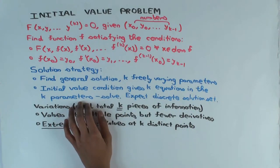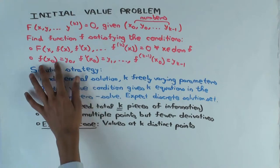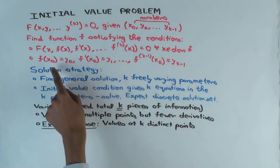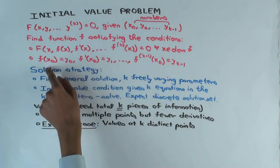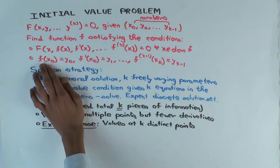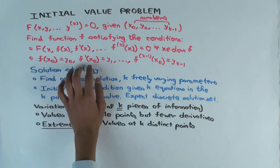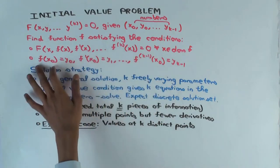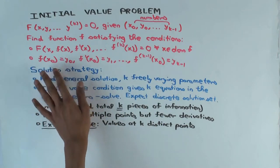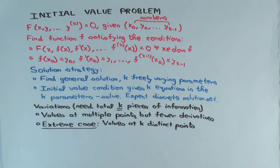The initial value condition will give k equations in those k parameters. You'll get equations indexed 0, 1, 2 up to k minus 1 — so there are k of them. We almost know the function except for the values of the parameters, so when you plug in those expressions, you'll get equations involving the parameters. You'll get k equations in the k parameters and you solve. If life is really good, you'll get a unique solution; otherwise, you hope to get a discrete solution set — maybe finitely many solutions or something close to that.